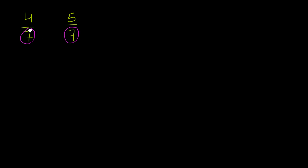So one way to think about it is this is literally 4/7. This is literally 5/7. So we could rewrite 4/7 as literally 4 times 1/7. And we can rewrite 5/7 as literally 5 times 1/7.